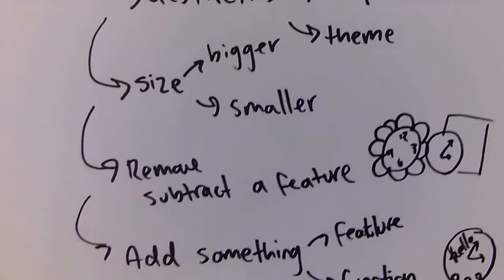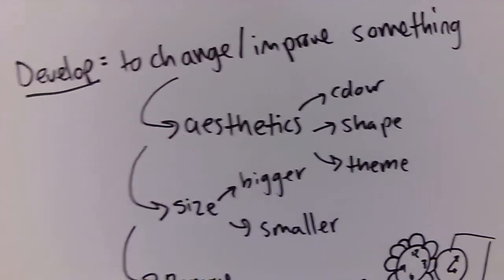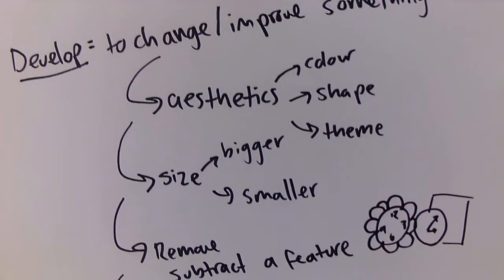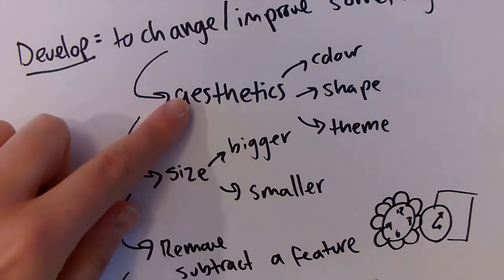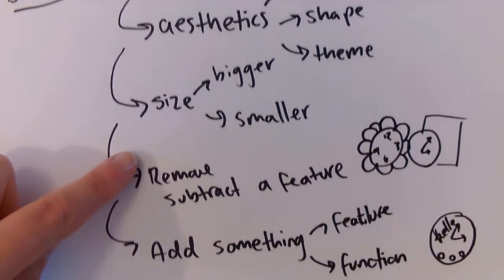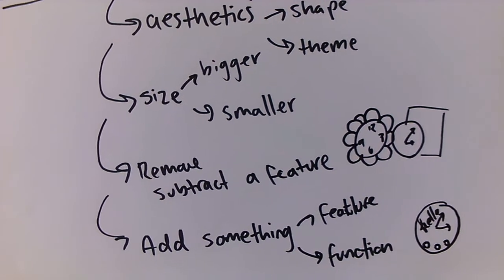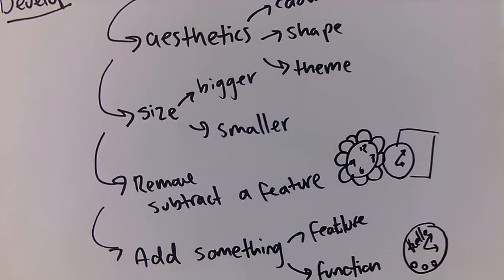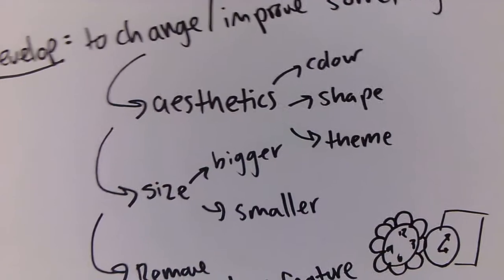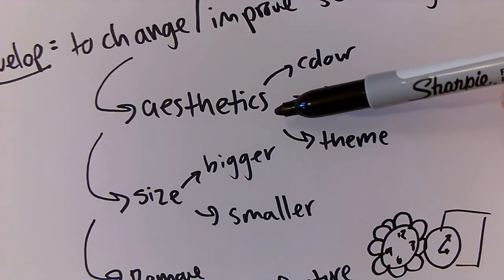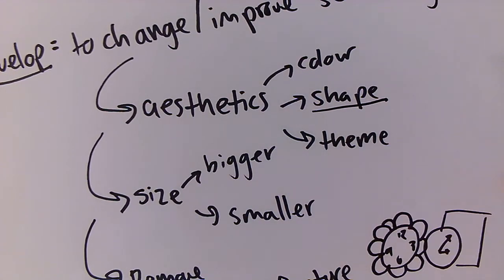So those are how we can develop a design idea. We can develop or change the aesthetics, the size, and then we can look at adding and removing some features. These are just some ideas to help us. We're going to focus today on the aesthetics. Primarily, we're going to focus on how to develop the shape.